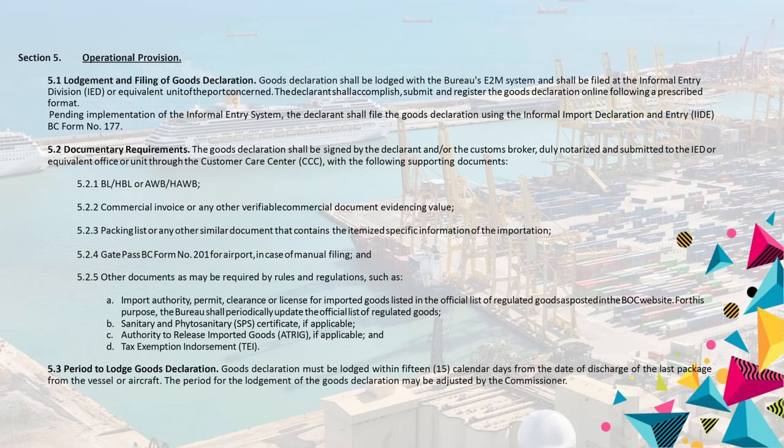Section 5. Operational Provision. 5.1 Lodgement and Filing of Goods Declaration. Goods Declaration shall be lodged with the Bureau's E2M system and shall be filed at the informal entry division (IED) or equivalent unit of the port concerned. The declarant shall accomplish, submit, and register the goods declaration online following a prescribed format. Pending implementation of the informal entry system, the declarant shall file the goods declaration using the Informal Import Declaration and Entry (IIDE), BC Form No. 177.